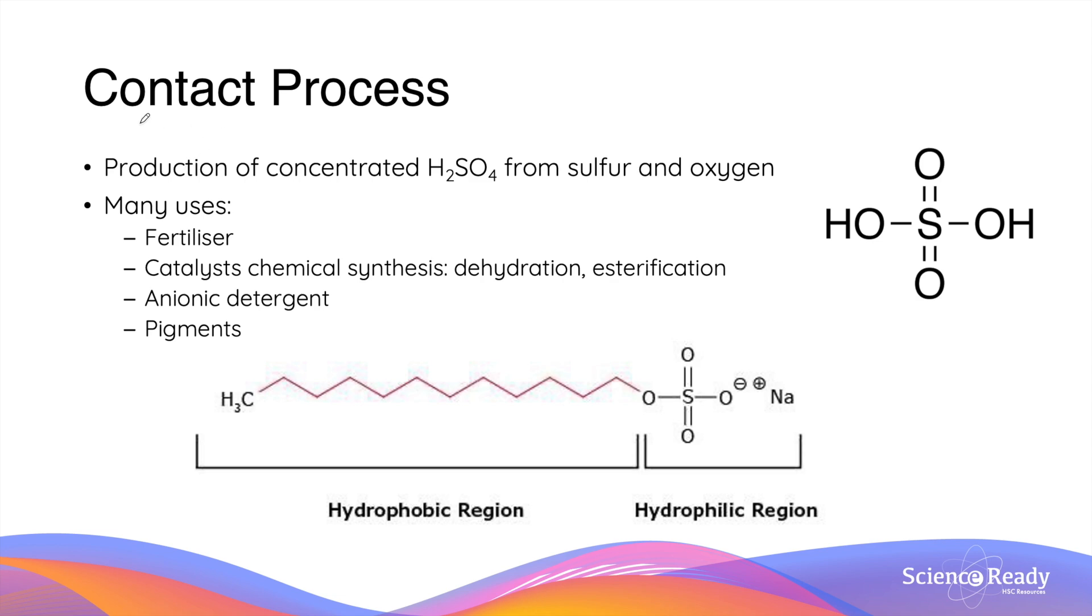The next process we'll look at is the contact process. And this chemical process involves the production of concentrated sulfuric acid by using raw materials such as sulfur and oxygen. Here's the structure of sulfuric acid.